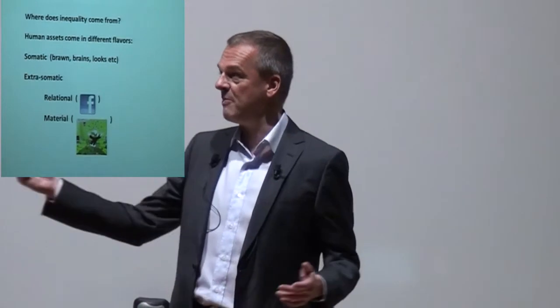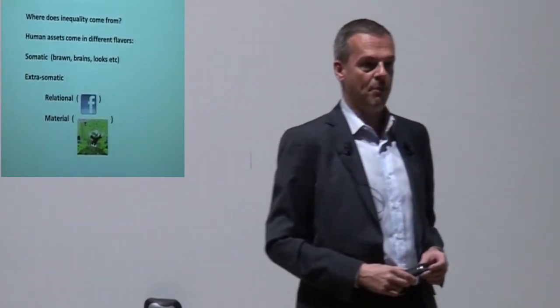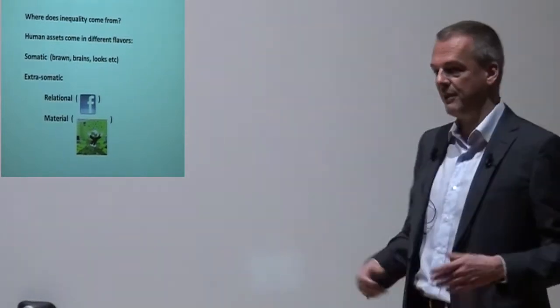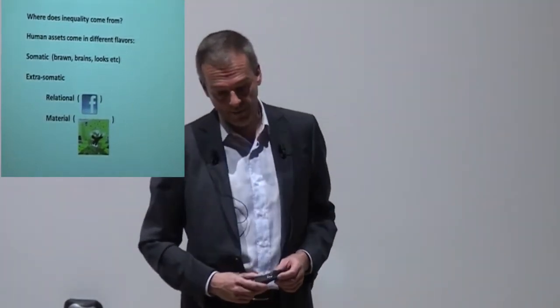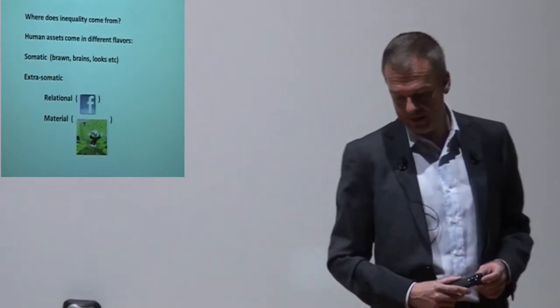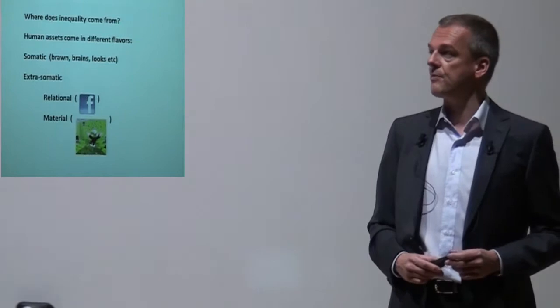There are assets I call somatic — they reside within the human body. People differ quite a lot in that respect: different strengths, intelligence, sexual appeal, social capabilities. That's the most fundamental determinant of inequality. Then there are extrasomatic resources — outside the human body — and relational resources, people's connections to others, which are a very important determinant of their success. And then, historically the most recent type, material wealth: physical objects people claim to control, going back to the Paleolithic — and more recently, real estate, livestock, money, equities.